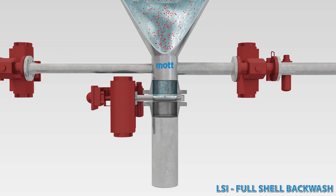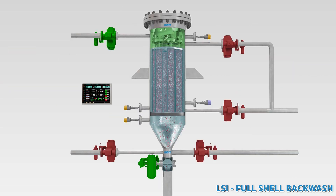The solids discharge valve is actuated. The expanding gas pocket forces liquid in the reverse direction out of the vessel, removing solids from the porous metal media's inner surface and flushing a concentrated slurry out of the filter vessel.